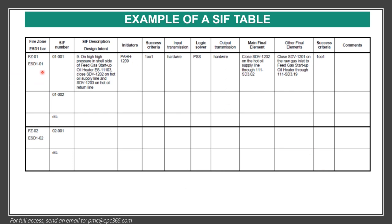This is an example of a SIF table that must be ready before the workshop. It has to be agreed with the company, contractor, and the chairman of the SIL. We write here, for example, fire zone one, ESD level one. This includes the SIF number, SIF description, what the initiators are — for example, pressure alarm high-high — the success criteria such as one out of one, the transmission hardware, the logic solver as part of ICSS, output hardware, and the final element, which is an SDV.